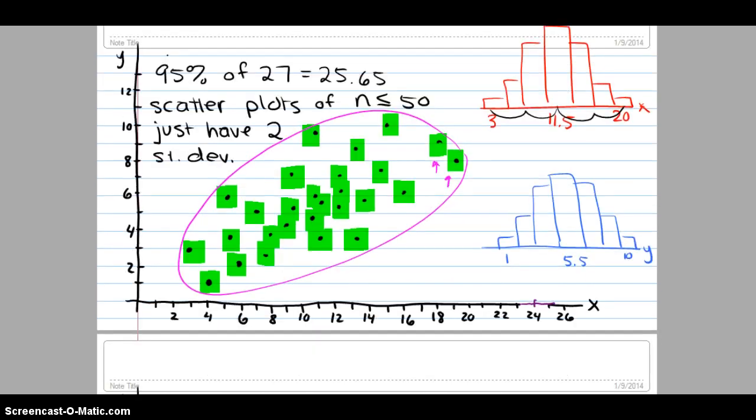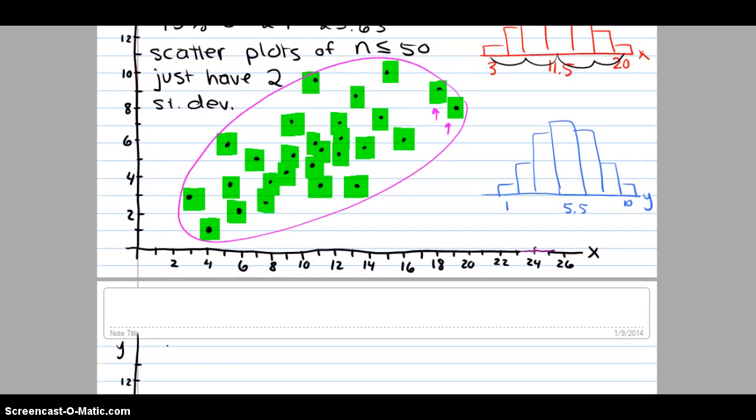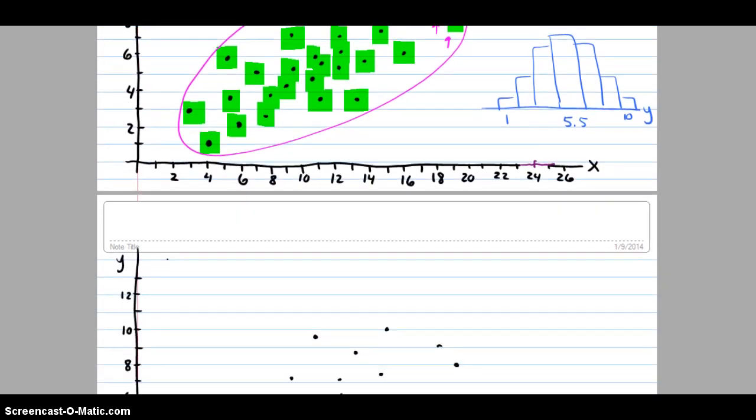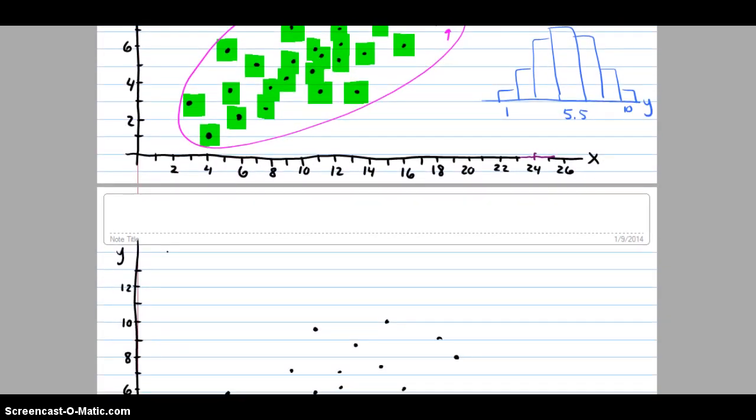If I look at the span of my points, the x points go from 20 to 3, and I divide that range by the four standard deviations I think we're spanning, I'm going to approximate my standard deviation of x to be 4.25.